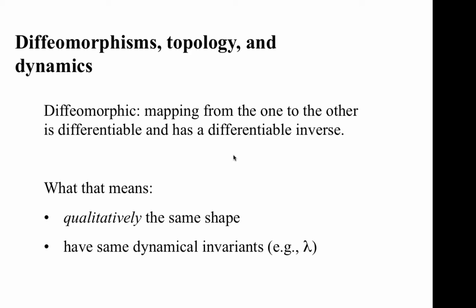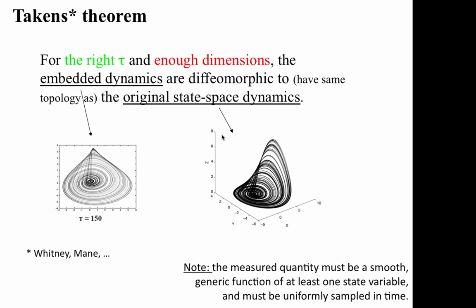A diffeomorphism is one-to-one, onto, invertible, and differentiable in both directions. And a correct embedding is related to the true dynamics by such a transformation if the conditions of the theorem are met.